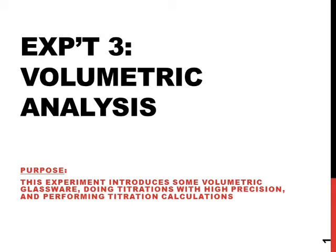Experiment 3: volumetric analysis. In this experiment, you will be performing one of the fundamental experimental procedures in chemistry — volumetric analysis, or titrations. Titrations involve using a solution of a known concentration combined with an indicator in order to find the concentration of an unknown solution. The goal during titrations is to produce precise, accurate data and results.